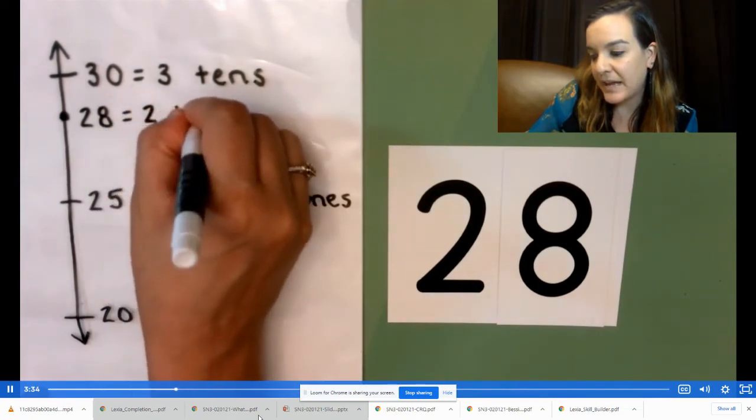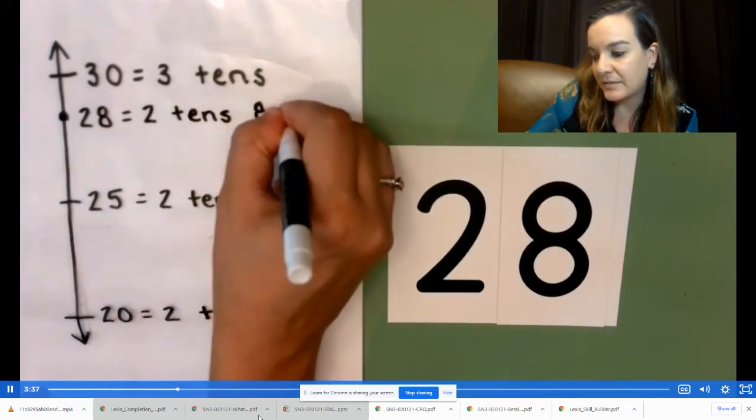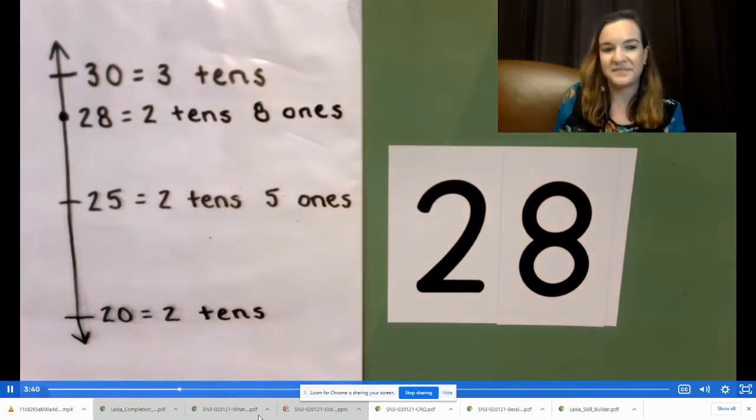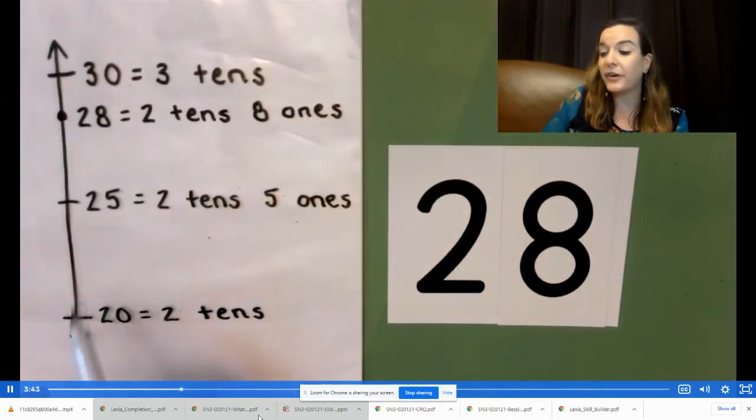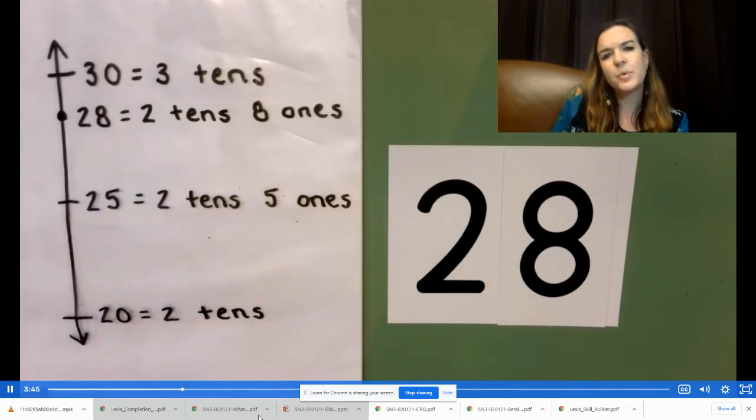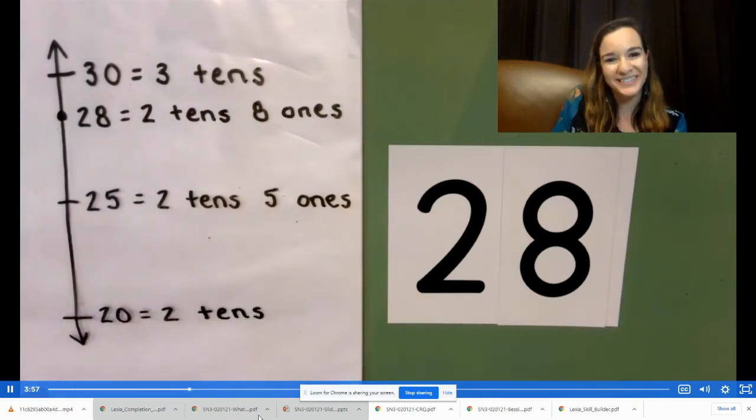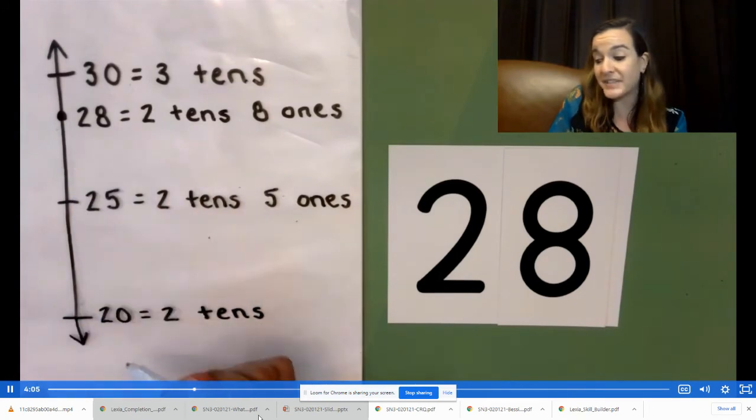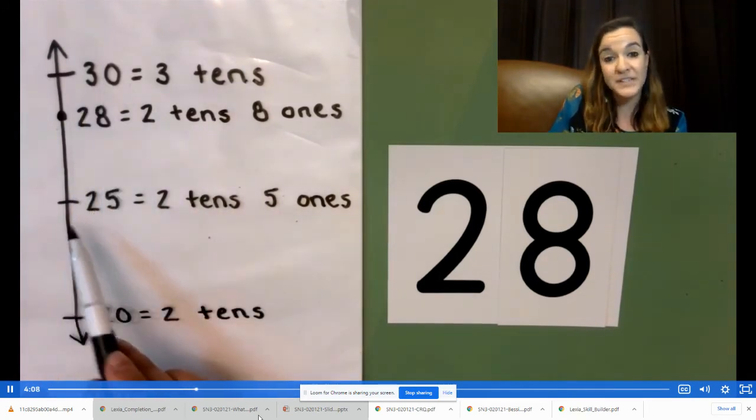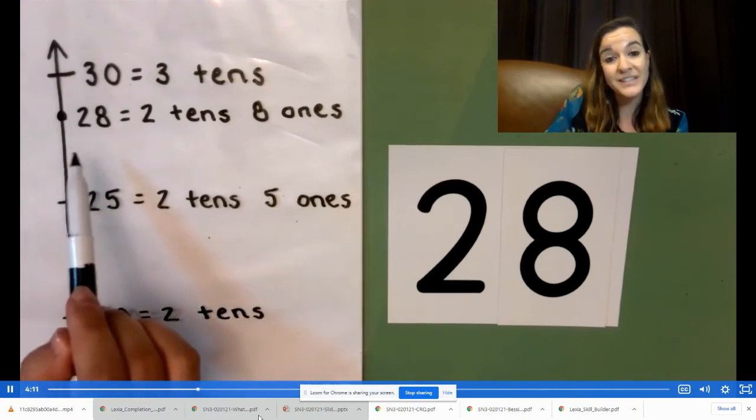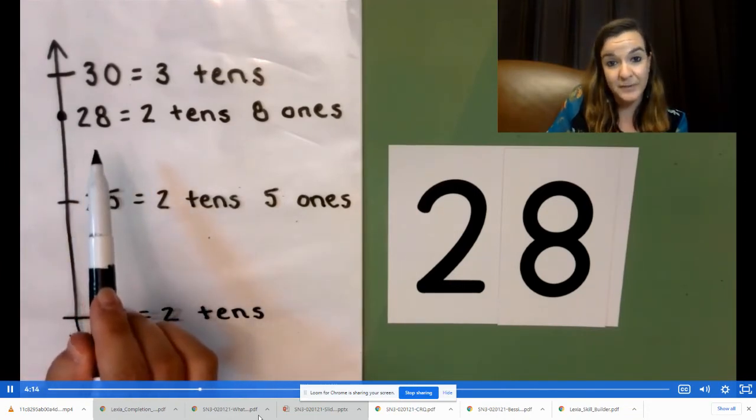28 is two tens, eight ones. When you look at your vertical number line, is 28 more than halfway, halfway, or less than halfway between 20 and 30? Discuss out loud how you know. 28 is more than halfway between 20 and 30. You can see that 25 is our halfway point and 28 is more than 25.